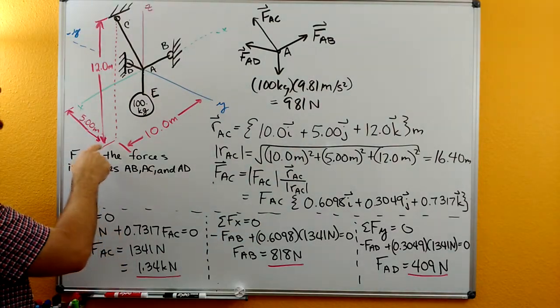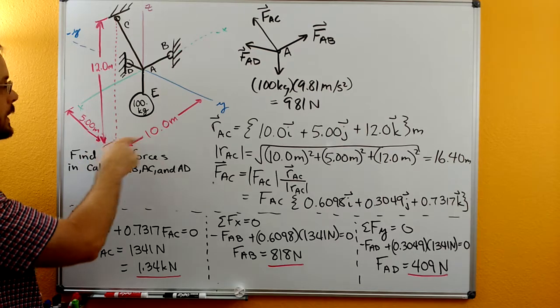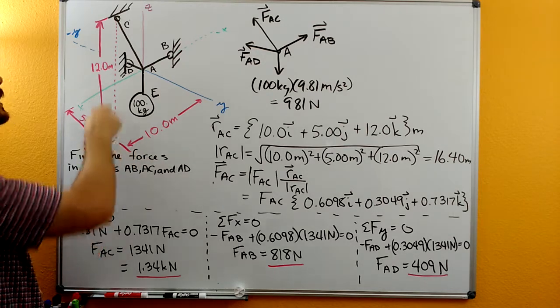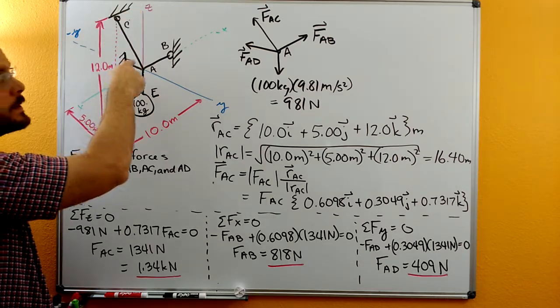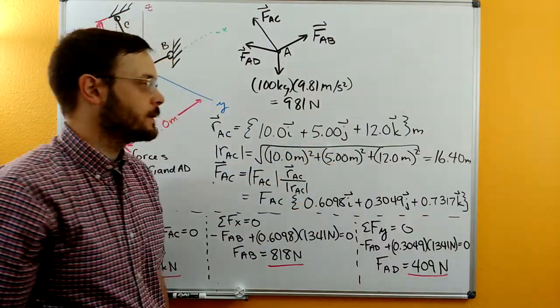And then in the z direction, we're going from the x, y plane here, up to point C. And that says 12 meters. And you can see this is parallel to the z-axis. So plus 12k meters.